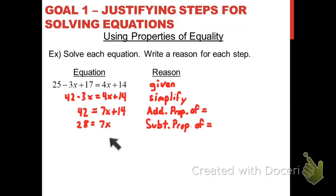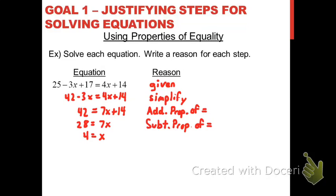Finally, we finish solving by dividing both sides by 7, which gives us 4 equals x. That uses the division property of equality.